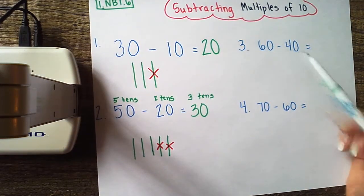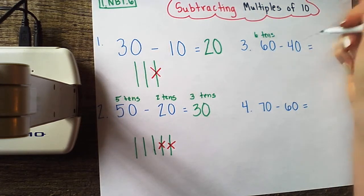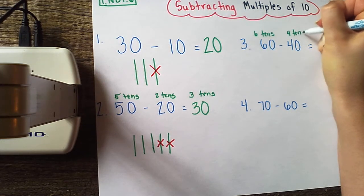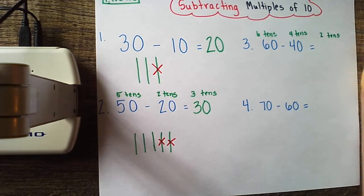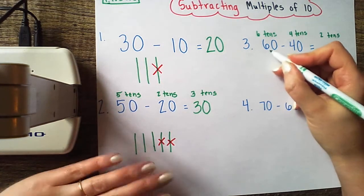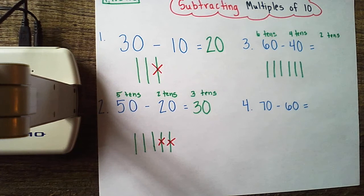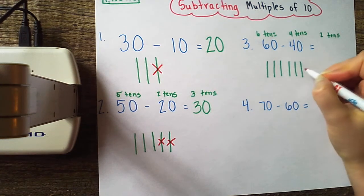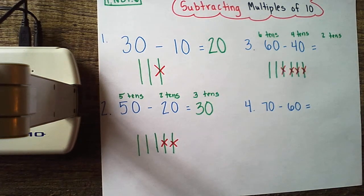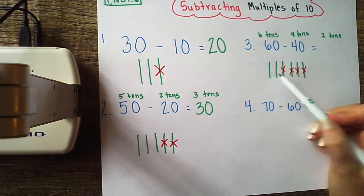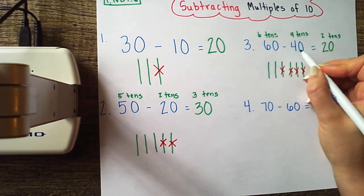Number 3: 60 minus 40. We know that 60 is the same as 6 tens, and we're taking away 40, which is the same as 4 tens. If I know what 6 minus 4 is, that's going to help me predict that 6 tens minus 4 tens is 2 tens. Let's draw a picture to confirm. We're starting with 60, which is 6 tens: 1, 2, 3, 4, 5, 6. We're subtracting 40, which is 4 tens: 1, 2, 3, 4. And what do we have left? You're right - 2 tens or 20. The digit in the tens place goes down by the number of tens we subtract.